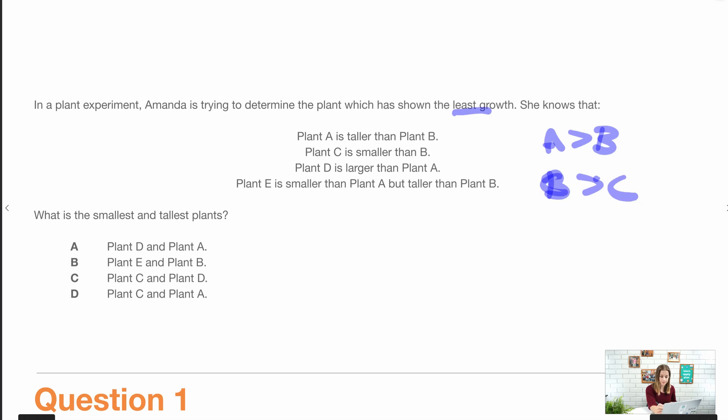We've got B is bigger than C, D is bigger than A, A is bigger than E, and E is bigger than B.